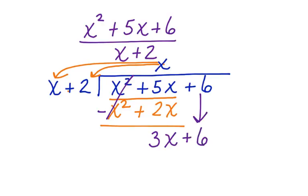x plus 2 goes into 3x plus 6 three times. And you can see that by going, what times x is going to give me 3x? What times 2 is going to give me 6? I can do a positive 3 there. 3 times 2 is 6. 3 times x is 3x. When I subtract, I end up with zero.